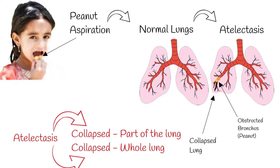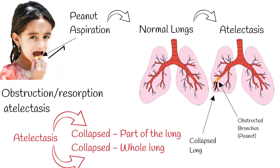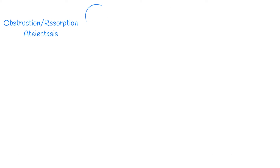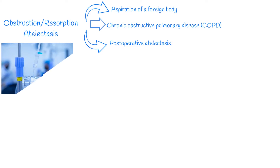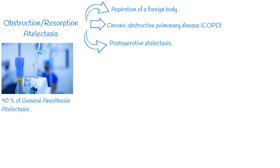There are several mechanisms of atelectasis. The above mentioned example is obstruction atelectasis, also called resorption atelectasis. Other examples of resorptive atelectasis are aspiration of a foreign body, chronic obstructive pulmonary disease (COPD), and postoperative atelectasis. Atelectasis develops in 90% of people undergoing general anesthesia for a surgical procedure.